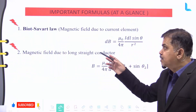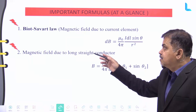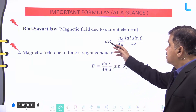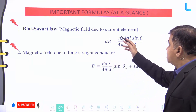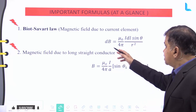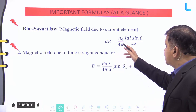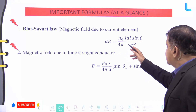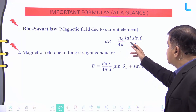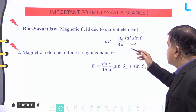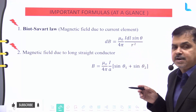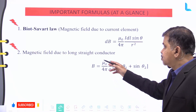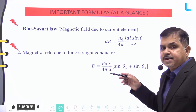Number one: the Biot-Savart Law. The magnetic field due to a current element dB is given by mu naught divided by four pi, into i dl sine theta divided by r squared.